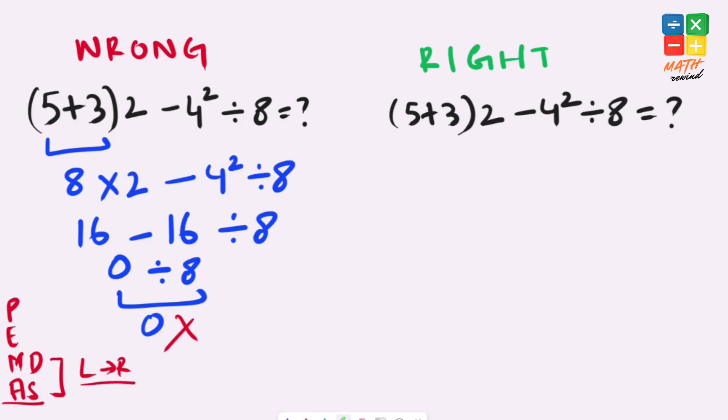Now let's rewind and solve this equation the right way. So according to the rules we must first solve parenthesis. So 5 plus 3 is inside parenthesis which equals 8 times 2 minus 4 square divided by 8.